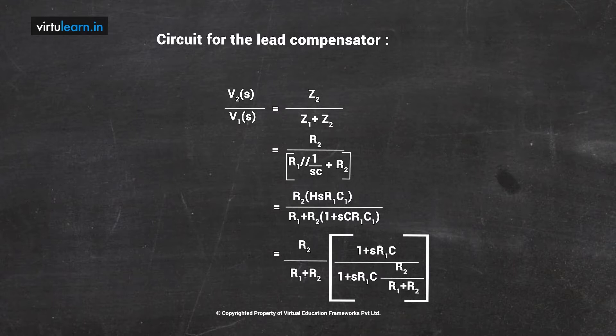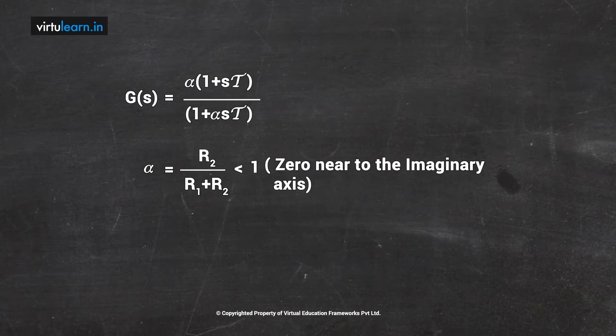Rearranging the terms, the transfer function becomes: GC(S) = [R1/(R1+R2)] × (R1·C·S + 1) / ([R1·R2·C/(R1+R2)]·S + 1). Comparing this with the defined lead compensator form, we identify α = R1/(R1+R2) and the expression matches α × (1 + τS) / (1 + ατS).